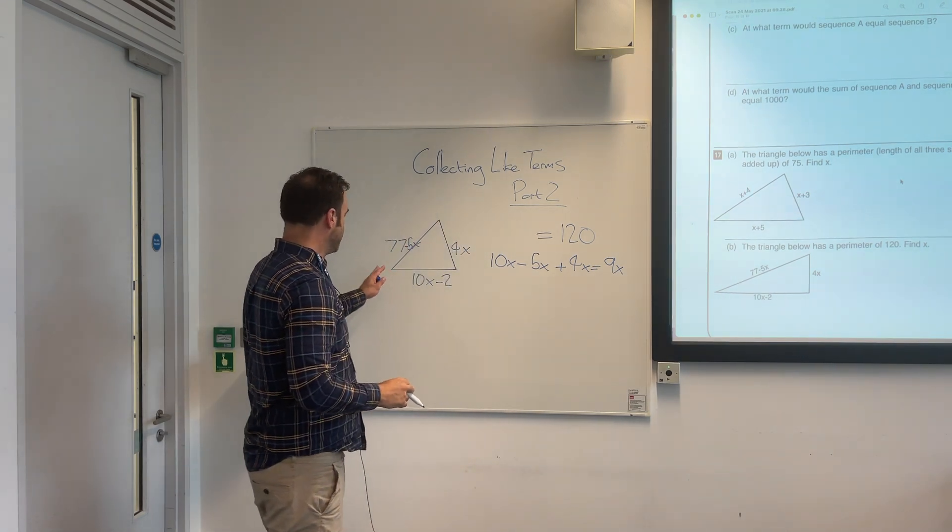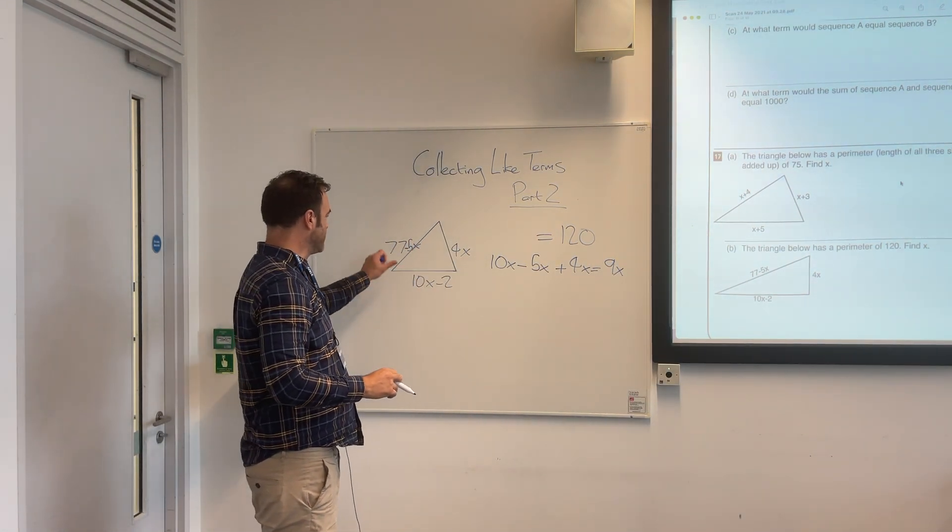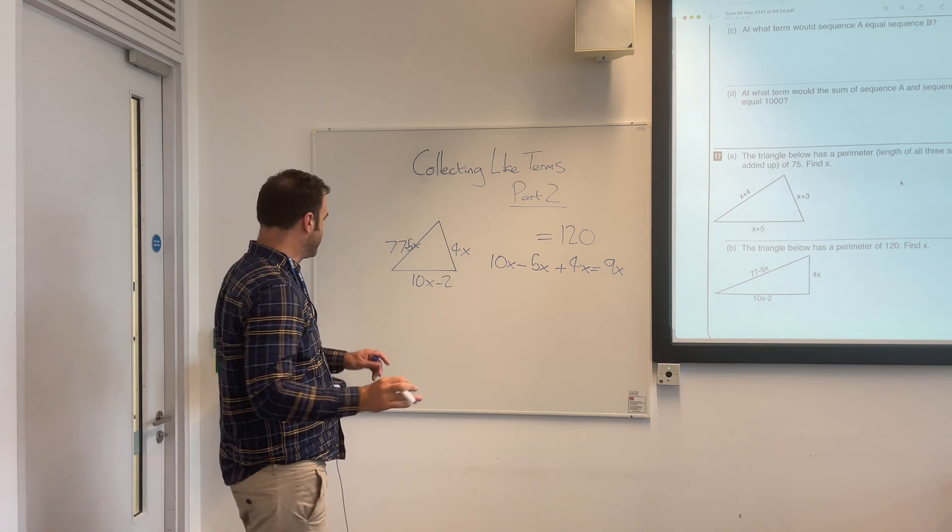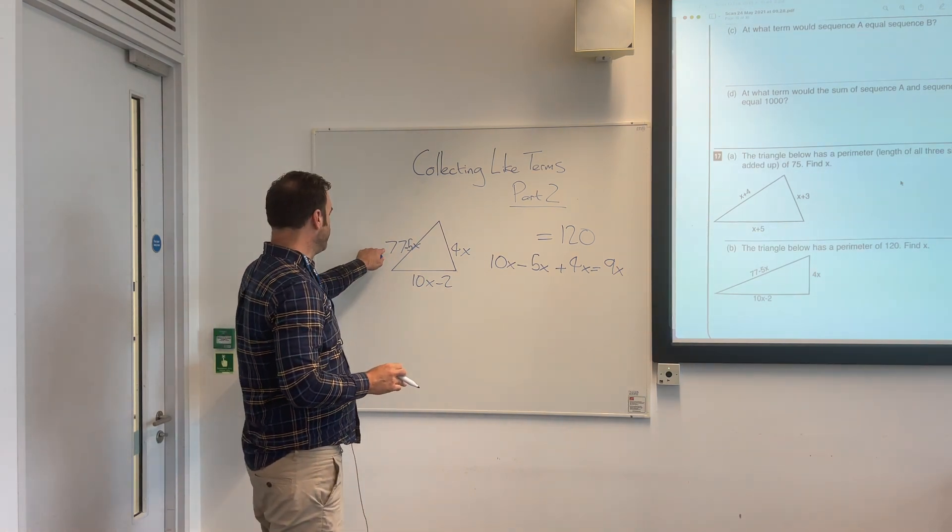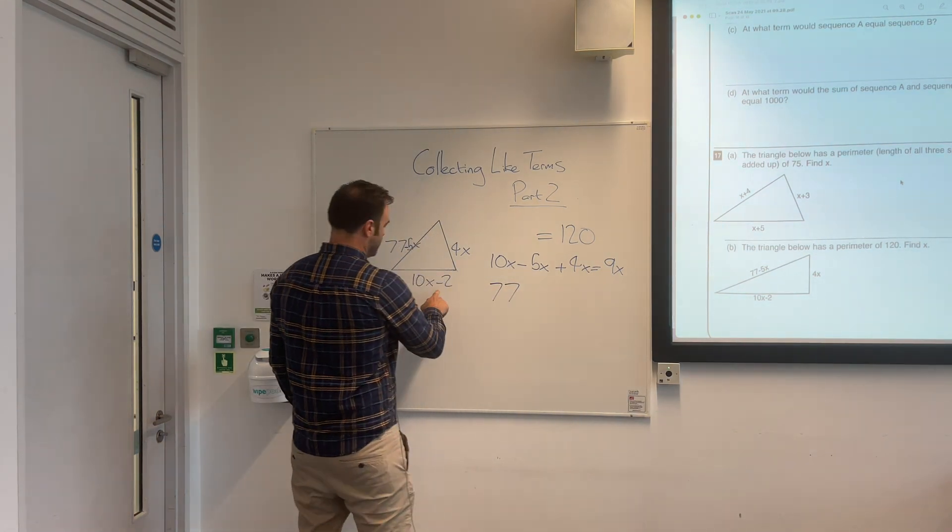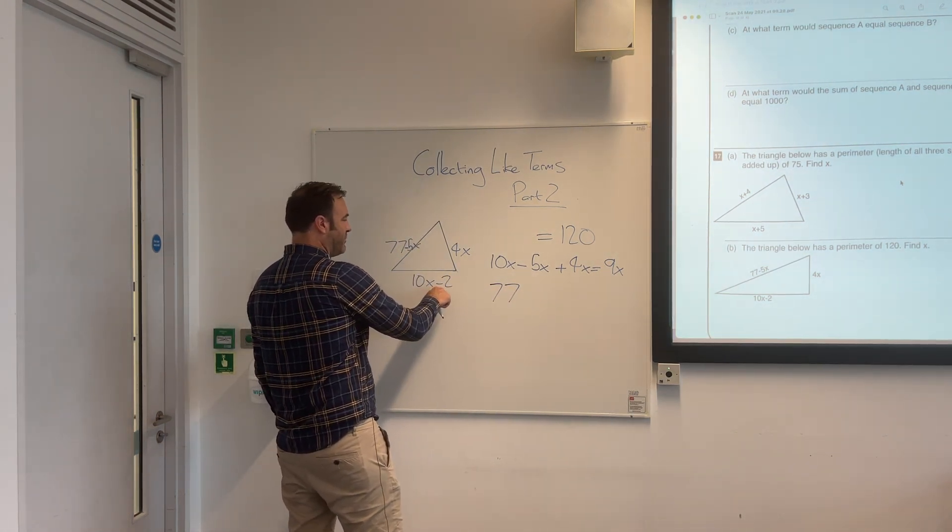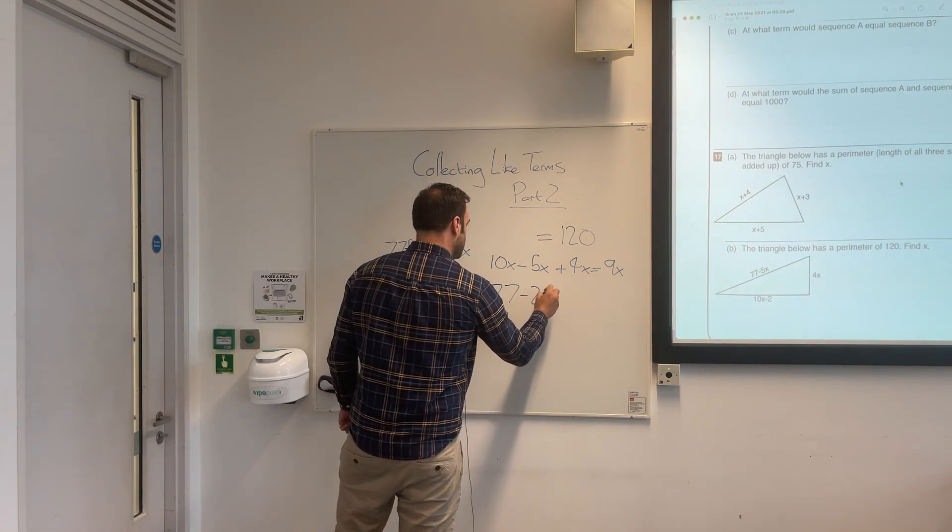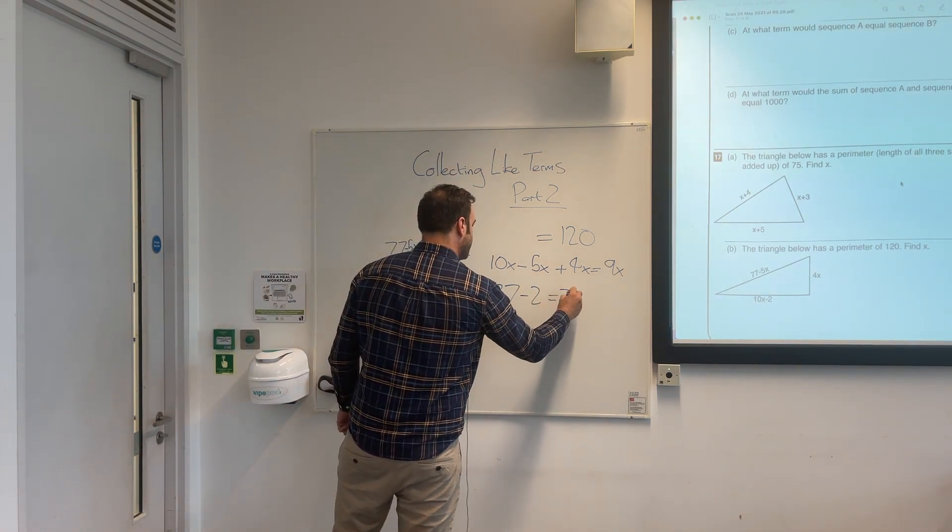The next thing we need to do is collect the numbers. Numbers on their own are treated separately in algebra. You've got a symbol before this, so it's positive 77. The operator before it, minus 2 equals 75.